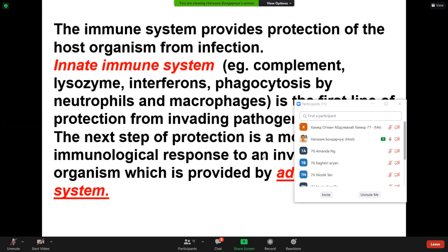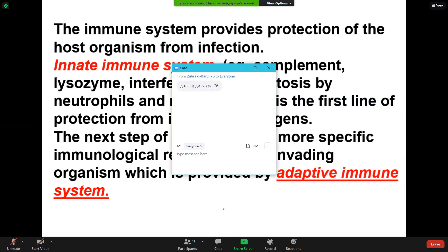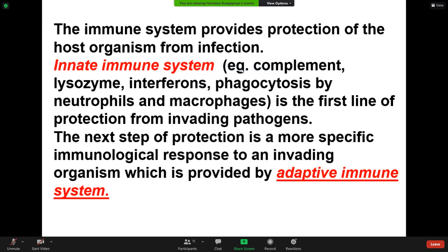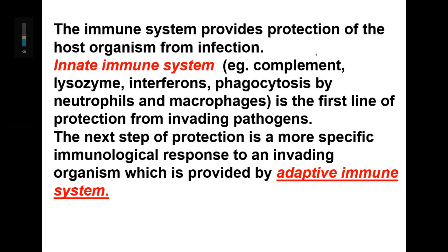The function of the immune system is to provide protection of the host organism from infection. We can subdivide the immune system into the innate immune system, which includes complement, lysozyme, interferon, phagocytosis, neutrophils and macrophages, and it is the first line of protection from invading pathogens.